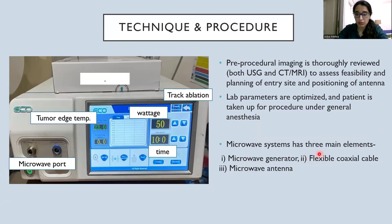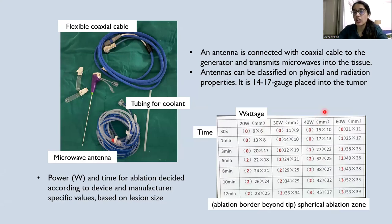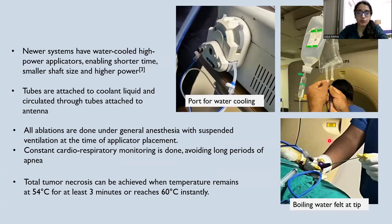Microwave systems have three main elements: the microwave generator with wattage and time display, option for tract ablation, and display of tumor edge temperature. The microwave antenna is connected via coaxial cable to the generator and transfers microwaves into the tissue. These antennas are based on physical and radiation properties and are usually 14 to 17 gauge in size. Power and time for ablation is decided according to device and manufacturer-specific values based on lesion size. Newer microwave systems have water-cooled high-power applicators enabling higher power delivery in a shorter time.